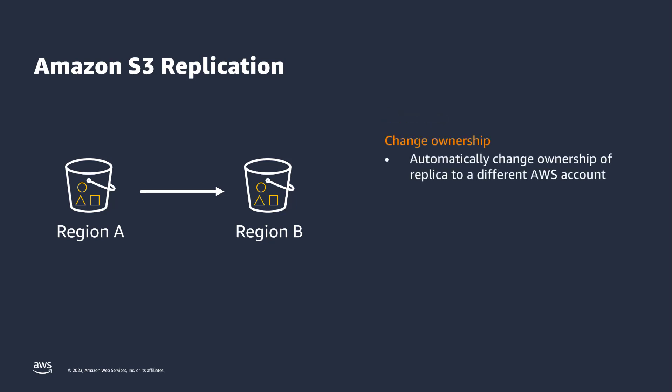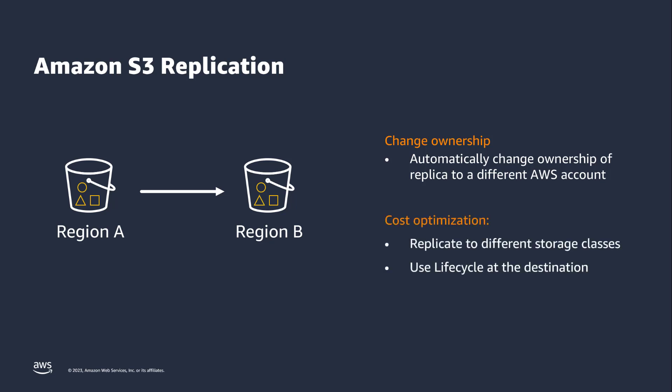Replication also allows you to change the ownership of the replica to a different AWS account, which can be used as another means of protecting data against malicious activity. Lastly, you can optimize your storage costs by replicating objects into a different storage class such as Glacier Flexible Retrieval or Glacier Deep Archive at the destination. You can also replicate your data to the same storage class and then use an S3 lifecycle configuration at the destination to move your objects to more cost-effective storage over time.